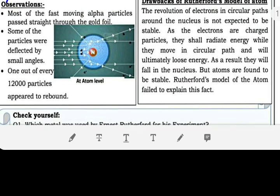Drawbacks of Rutherford's model of atom. The revolution of electrons in circular paths around the nucleus is not expected to be stable. As electrons are charged particles, they shall radiate energy while they move in circular paths and will ultimately lose energy.